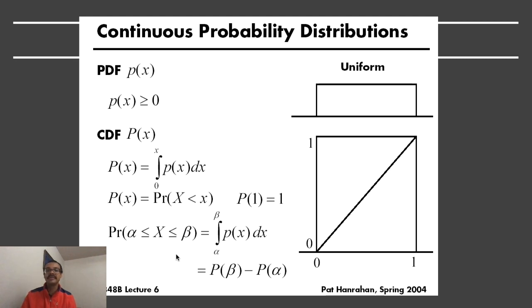If you want to find the probability that the random variable is between some alpha and some beta value, then you can simply subtract out the corresponding cumulative distribution function values. These are basic concepts when talking about probability and statistics.